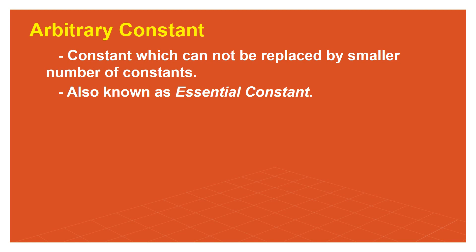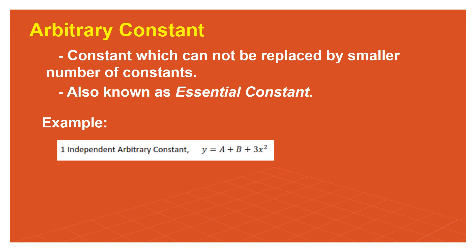There is what is called an independent arbitrary constant. The arbitrary constant is a variable that represents a constant. Once a number is placed in its position, it is no longer considered an independent arbitrary constant. For example, if our general equation is y = a + b + 3x², since a and b are both constants, they can be combined into one: c. So we have y = c + 3x², which gives us one independent arbitrary constant.